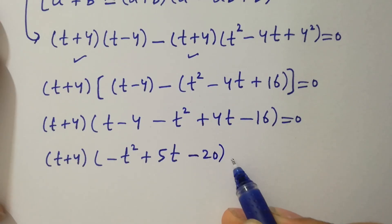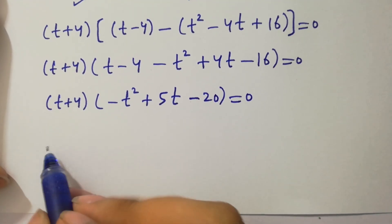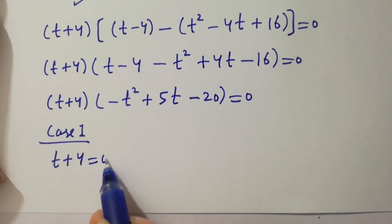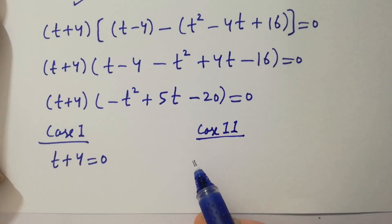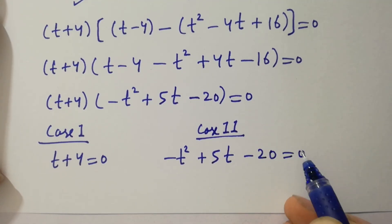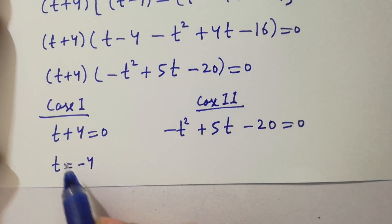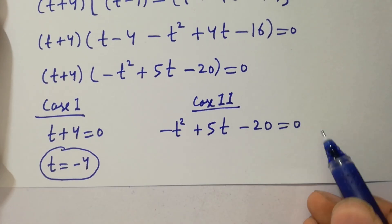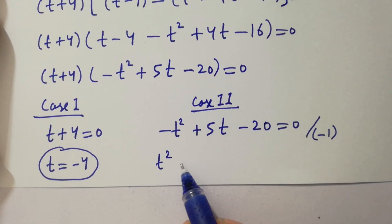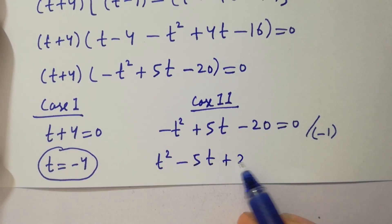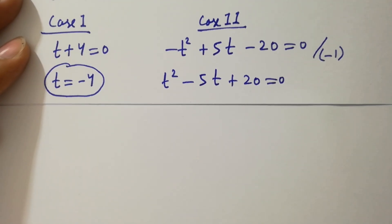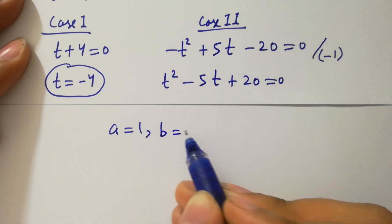So we have two cases. Case one: t plus 4 equal to 0, and case two: minus t squared plus 5t minus 20 equal to 0. From case one, t equal to minus 4, which is our real solution. For case two, dividing by minus 1 gives t squared minus 5t plus 20 equal to 0, which is our quadratic equation. Comparing, we have a equal to 1, b equal to minus 5, and c equal to 20.